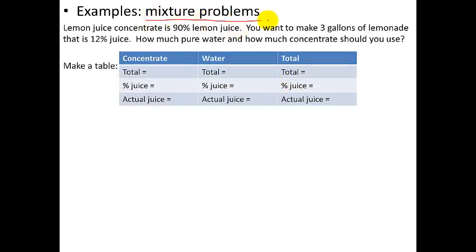Mixture problem. This one is a little bit easier, and I've already set up the table for us. Lemon juice concentrate is 90% lemon juice. We want to make 3 gallons of lemonade that's only 12% juice. How much pure water and how much concentrate should I use? So, the amount of concentrate, I don't know. The amount of water, I don't know. The total amount, I know. So I want to have 3 gallons. So I can fill that in.